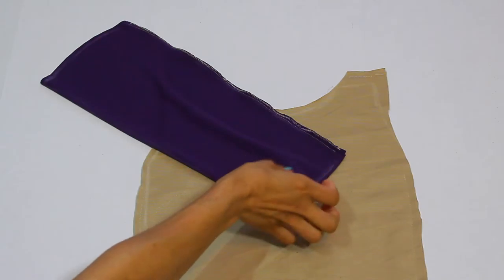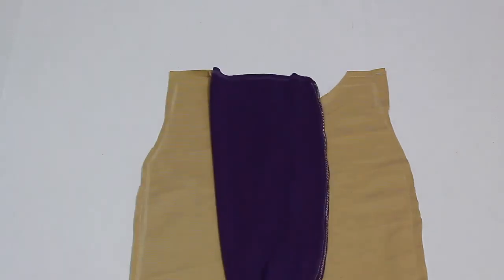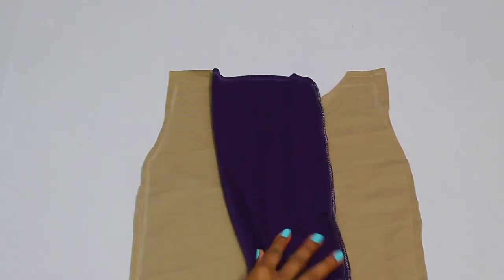Once you're done hemming it and finishing off the raw edges it should look like this. And these are the two pieces that you should end up with: sleeve and top.